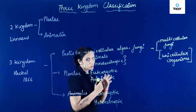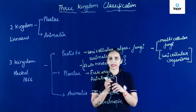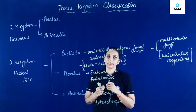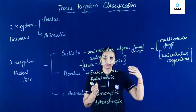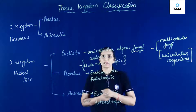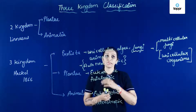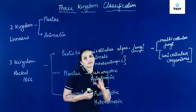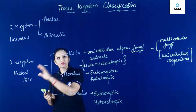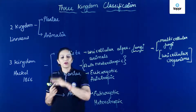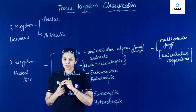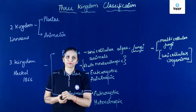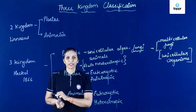Baad mein is mein se multicellular fungi ko remove kar diya gaya, because when we will be taking fungi, then it has to be given a separate kingdom. That's why it had to be removed. So, three kingdom classification system given by Haeckel — aur unhone Linnaeus ke classification ke andar kya add kiya tha? Kingdom Protista. Thank you.